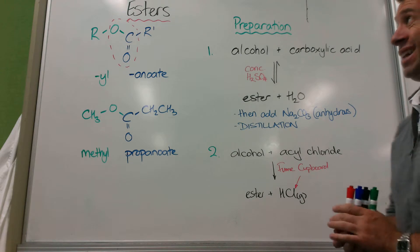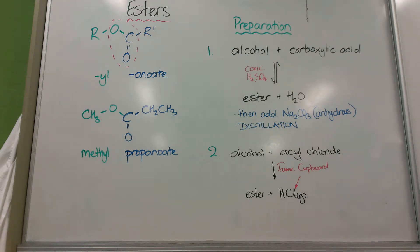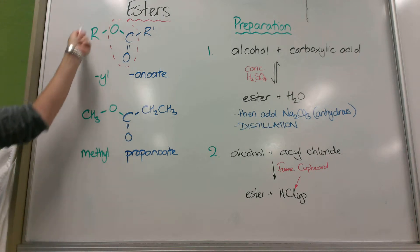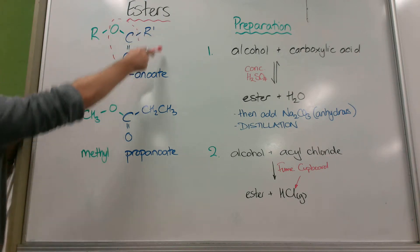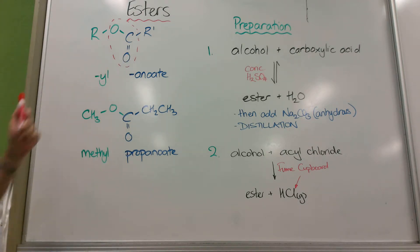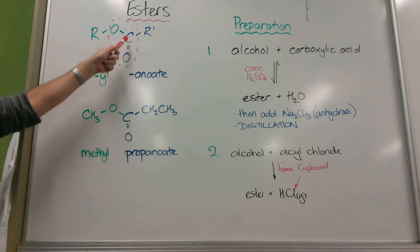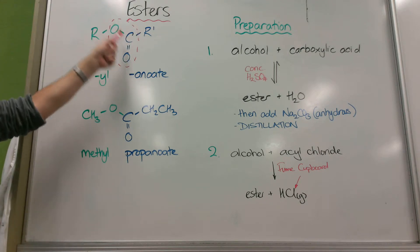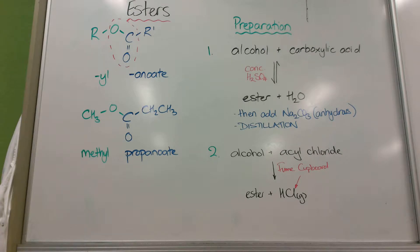I'm going to go through how we name them because this is a new compound for us this year. So they're made from an alcohol, so you can see an alcohol there missing its hydrogen, and they're made from a carboxylic acid. Alternatively, an alcohol and an acyl chloride, so this is an acyl chloride missing its Cl.